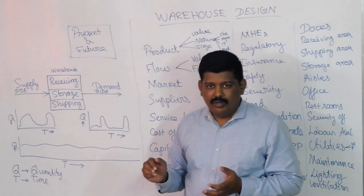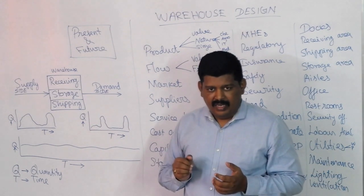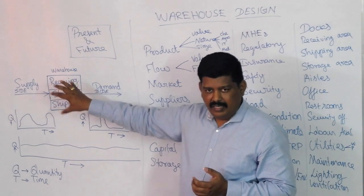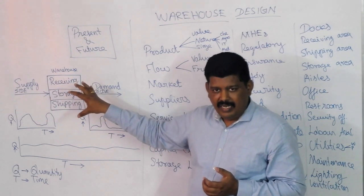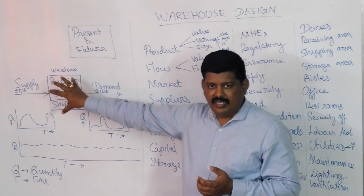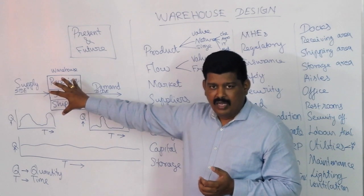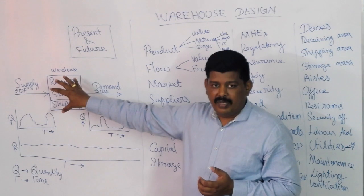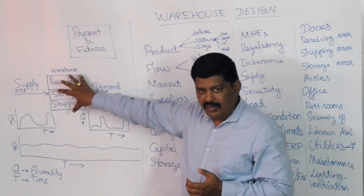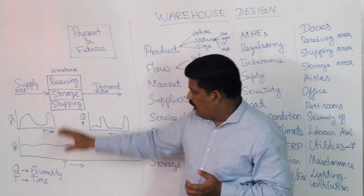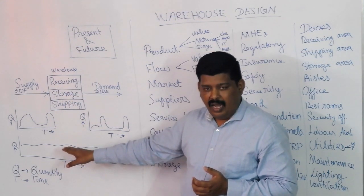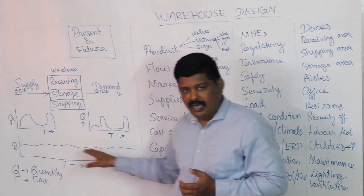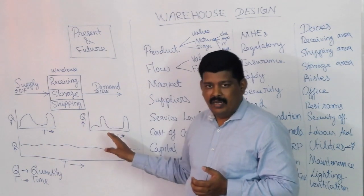To ensure a smoother supply chain, we introduce a warehouse between the supply side and the demand side. This is the main value addition of the warehouse — its key purpose is to absorb the shock in the supply chain, making variability within the supply chain smoother rather than highly volatile.